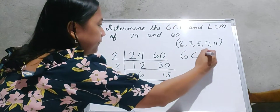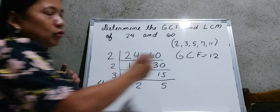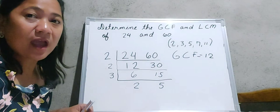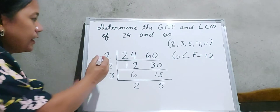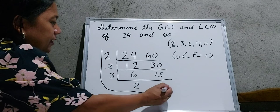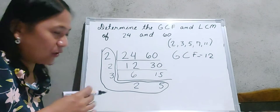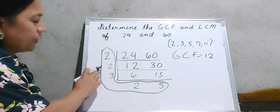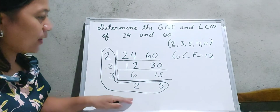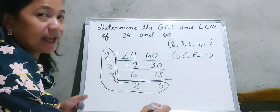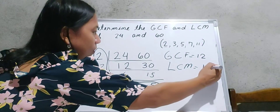Therefore, the GCF of 24 and 60 is 12. To find the LCM, we multiply all the numbers together: 2 times 2 is 4, 4 times 3 is 12, 12 times 2 is 24, and 24 times 5 is equal to 120. So the LCM of 24 and 60 is 120.